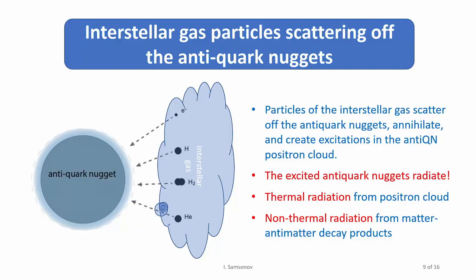Let me just repeat my argument. This is just schematic. We have anti-quark nugget and we have interstellar medium. It may be represented by gas like hydrogen, hydrogen molecules, or maybe helium, maybe electrons. These particles collide with anti-quark nuggets and they annihilate. They should produce different types of radiation.